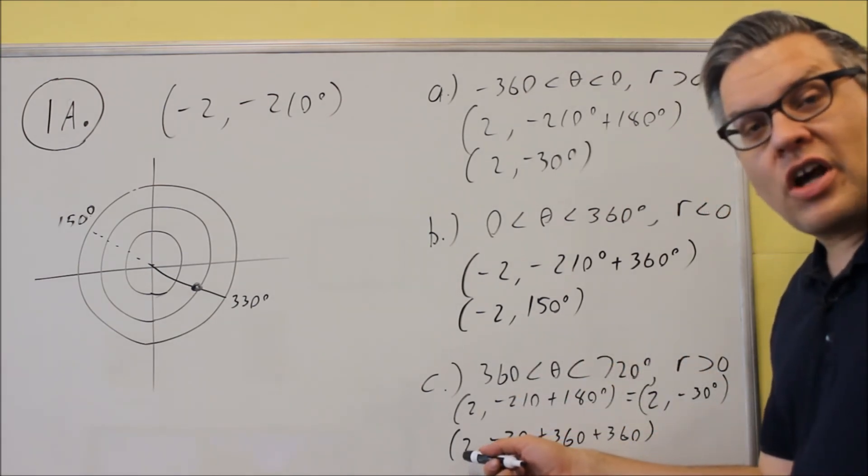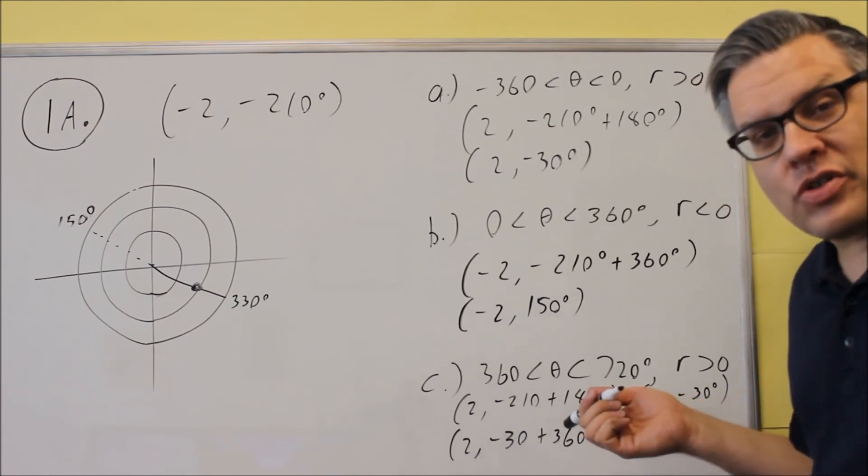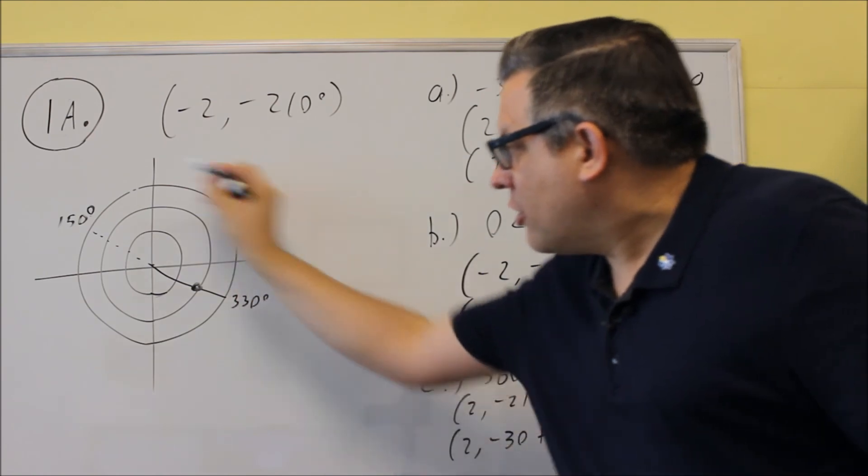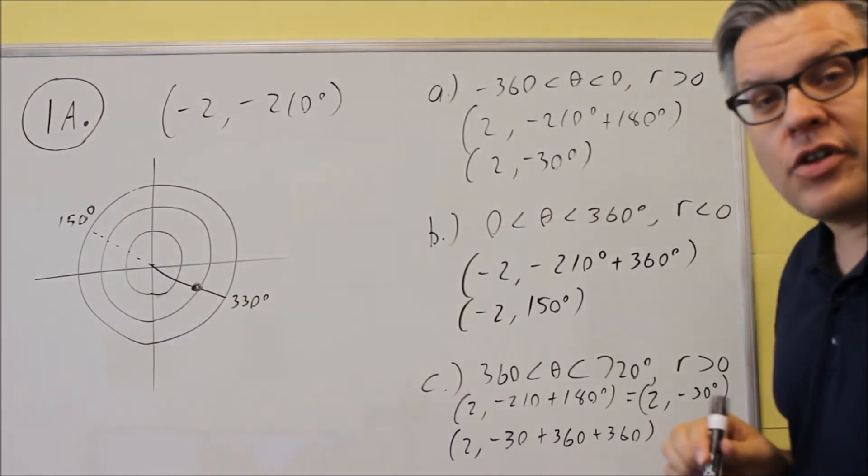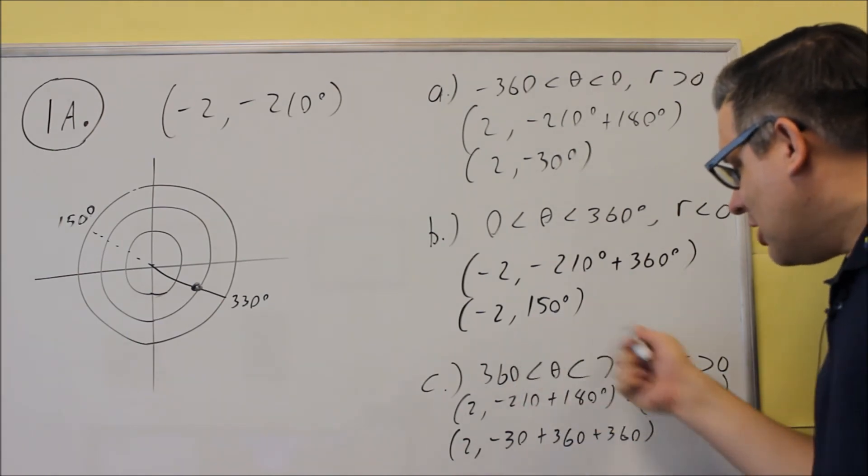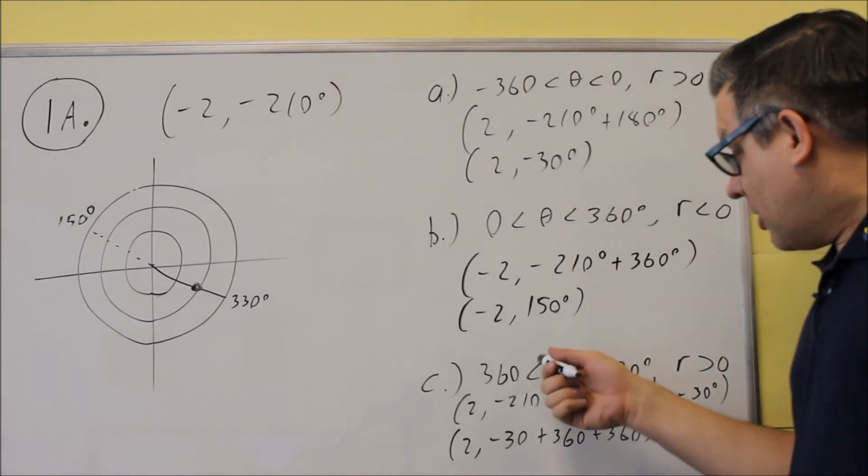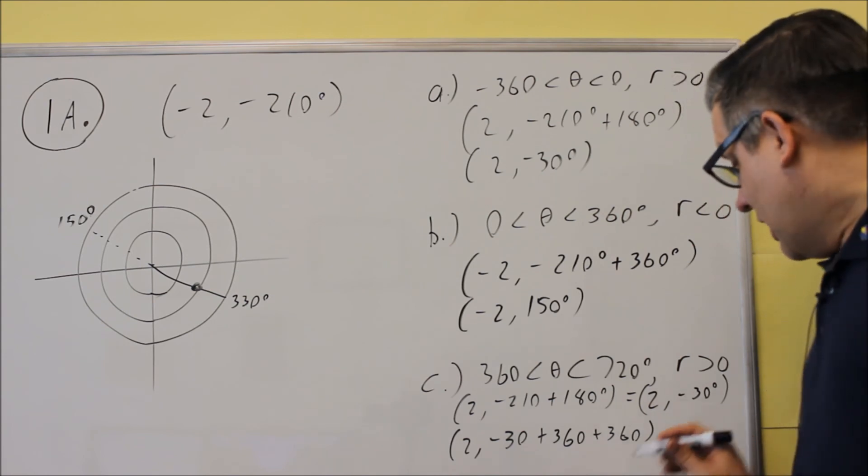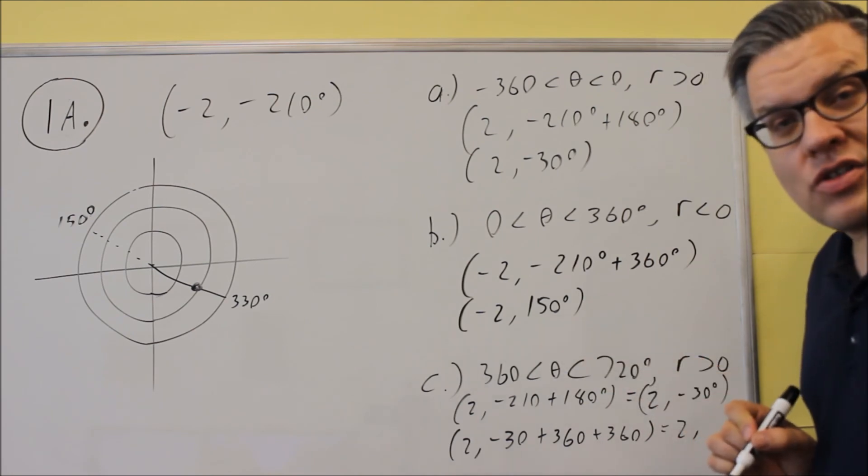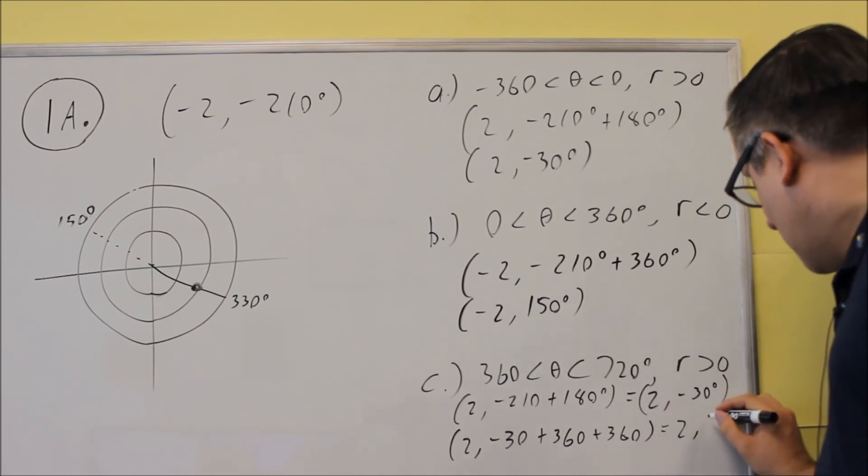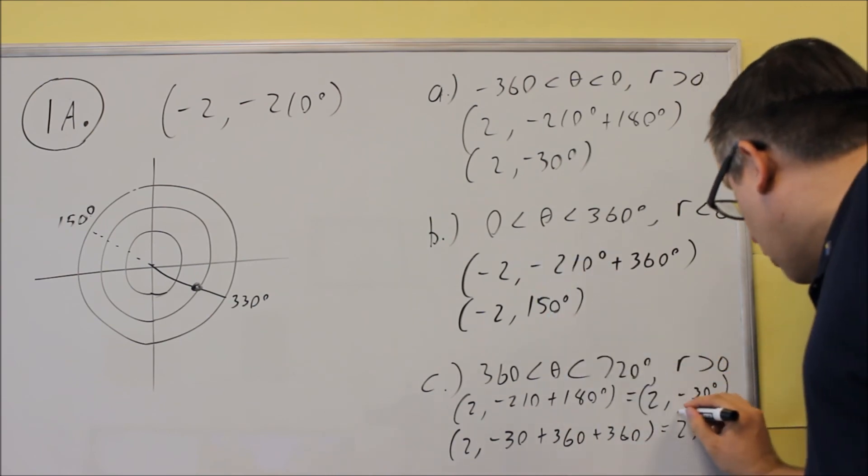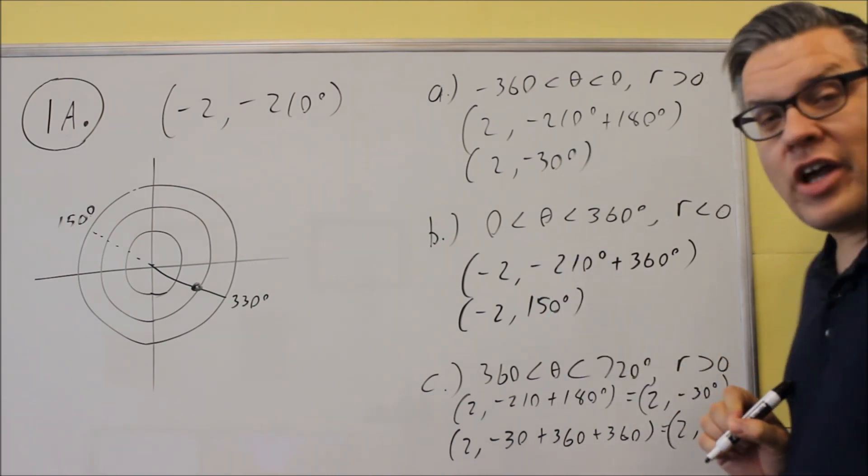So as long as you're not changing the sign of the R, you can just keep adding as many 360s as you want because you're just going around the circle. If we go here and go around and around and around, we're still going to arrive at the same spot. So I can add as many 360s as I want to get it to equal whatever the condition is for the angle. Now, when I do that, I get 2 and I get 720 minus 30, which means I'm going to get 690 as the answer. And so this is what I would put as my final answer for C.